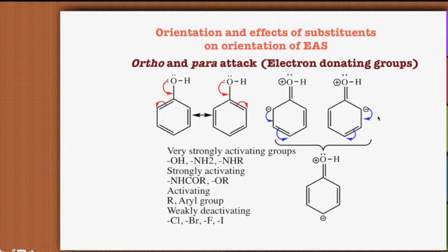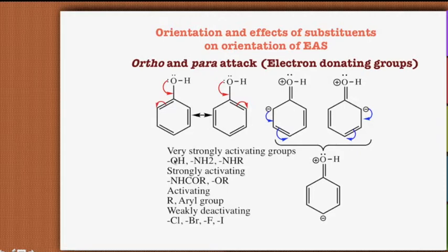So the incoming electrophile will attack at either the ortho or para position. If you react phenol with an electrophilic reagent you get ortho and para substituted phenol. Electron-donating groups are subclassified into four categories: very strongly activating, strongly activating, activating, and weakly deactivating groups. Most of these groups have a lone pair of electrons on the atom directly attached to the ring — for example, oxygen in the OH group has two lone pairs, the NH2 group has one lone pair, and alkoxy groups also have lone pairs — so they donate electrons by resonance.